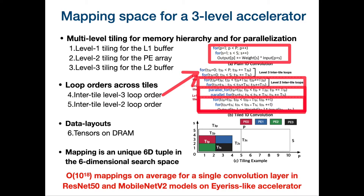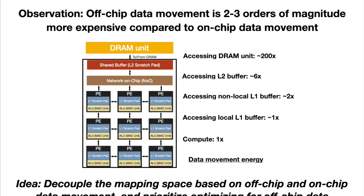Overall, a mapping is a unique six-dimensional tuple in the six-dimensional search space, and this mapping space can be really huge. For example, there exist on the order of 10^18 possible legal mappings on average for a single convolutional layer in ResNet-50 and MobileNet V2 models on an edge-class accelerator. It's really challenging to explore such a large mapping space using a brute force or random sampling approach. We approach solving this problem using the observation that off-chip data movement is typically 2 to 3 orders of magnitude more expensive compared to on-chip data movement, indicating that it's important to optimize first for off-chip data movement — which forms the basis of our solution.